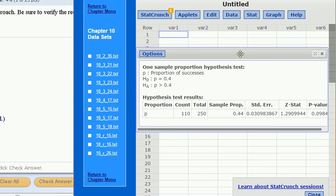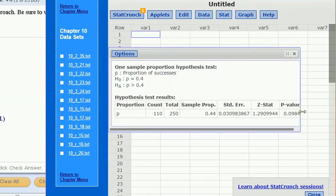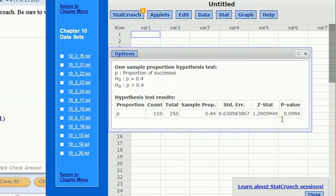and what we're going to get here, I'll make this a little bigger so we can see it all, we are given the p-value. We're given a standard error of our estimate, our estimate of 0.44, a standard error, the z statistic, 1.29, and the p-value.